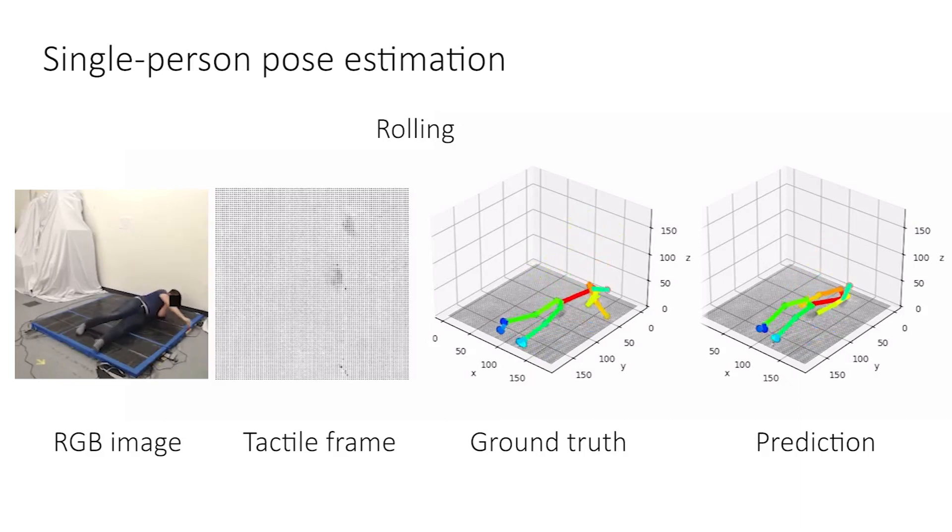Also, the model fails to predict the pose where actions are performed without notable physical contact with the floor. For example, the free-floating feet during rolling.